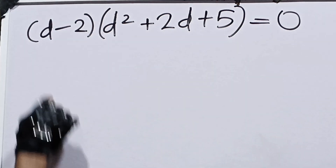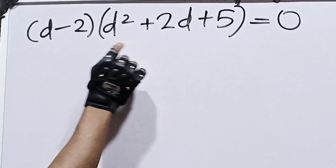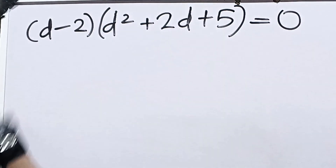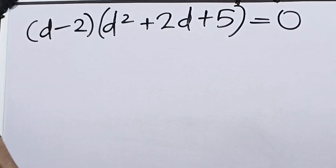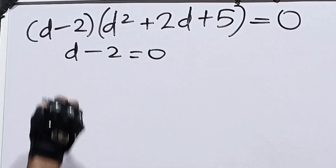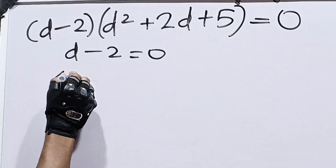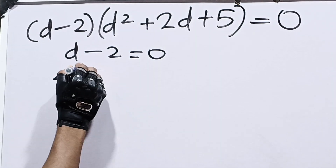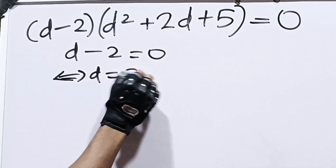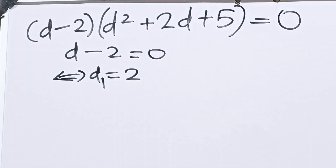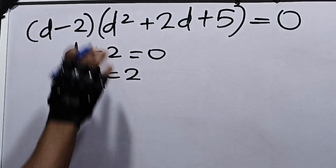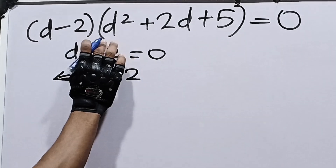When two factors multiply to zero, either the first or the second equals zero. Setting the first factor to zero: d minus 2 equals 0, which gives d equals 2. Let's call this d1. So d1 is equal to 2.